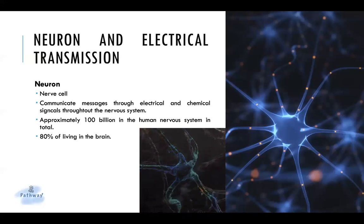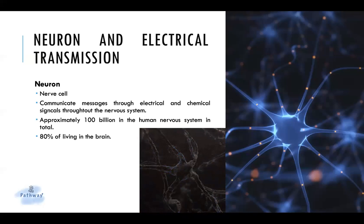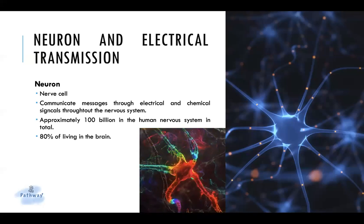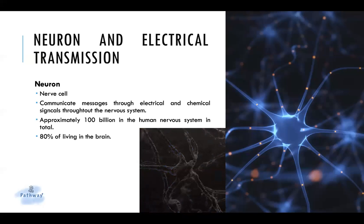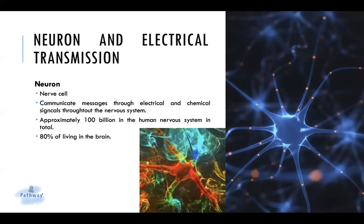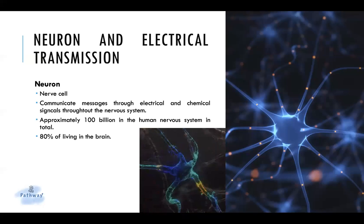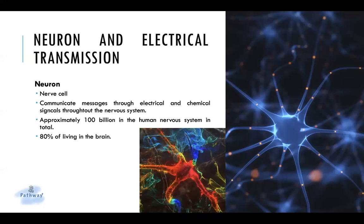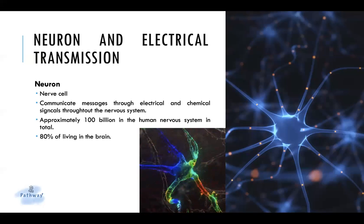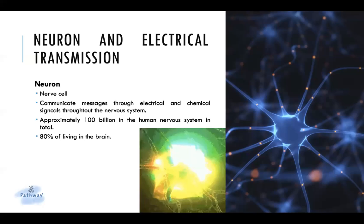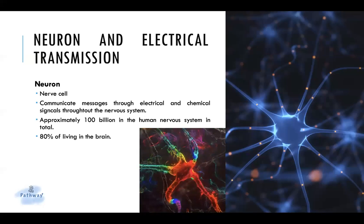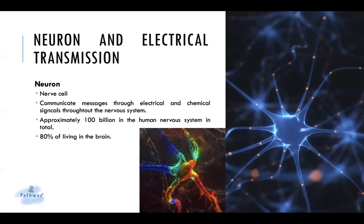What are neurons? Neurons are nerve cells. They send electrical and chemical signals to one another to provide the nervous system with its main way of communicating. There are approximately 100 billion neurons in the human nervous system in total, with 80% of these living in the brain.